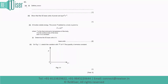Our first question is: define power. Power is defined as energy per unit time. The second part is to show that the SI base units of power are kg·m²·s⁻³.